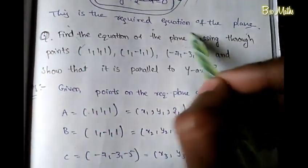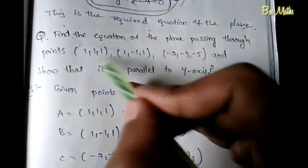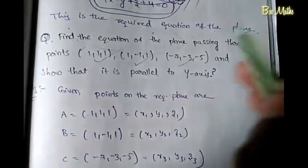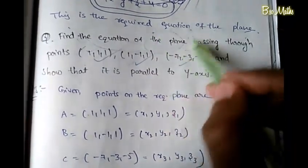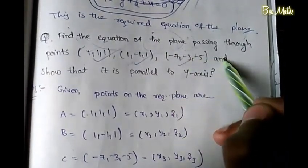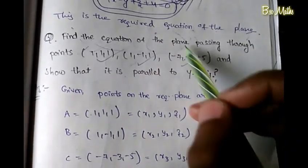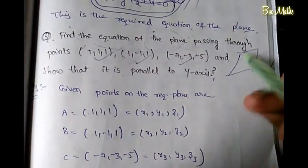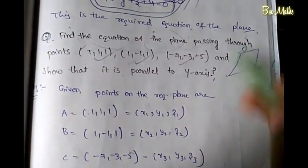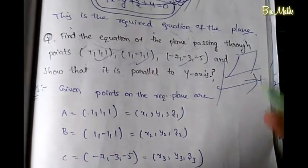We need to find the equation of the plane passing through 3 points, and show that it is parallel to the y-axis. We are going to use 3 points to find the equation of the plane. There are two methods available.